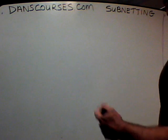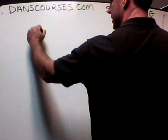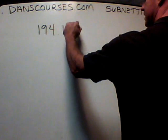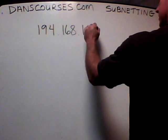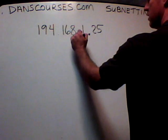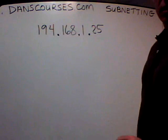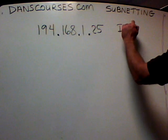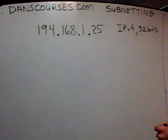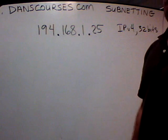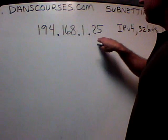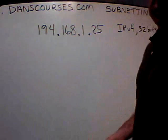First of all, let's start off with why we need to even learn this in the first place. I'm going to take a network address: 194.168.1.25. So there's an IP address. Let's agree on a starting point. This is an IPv4 address — it's 32 bits: 8 bits, 8 bits, 8 bits, and 8 bits. The numbers can range from 0 to 255 in each of these octets, making a 32-bit address.